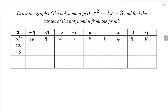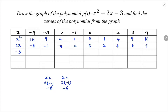Now for 2x: when x = minus 4, 2x = minus 8; x = minus 3 gives minus 6; minus 2 gives minus 4; minus 1 gives minus 2; 0 gives 0; 1 gives 2; 2 gives 4; 3 gives 6; 4 gives 8. And for the constant, just write minus 3 in every column.